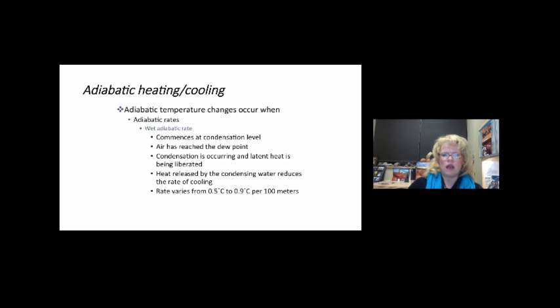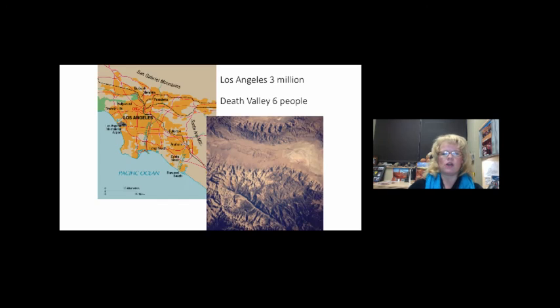Wet adiabatic lapse rates vary from 0.5 to 0.9 degrees Celsius for every hundred meters. It has to do with heat released by condensing water, which reduces the amount of cooling in the air. Condensation is occurring, latent heat is being liberated or released, and eventually the air reaches its dew point. When that happens, rain will typically occur.